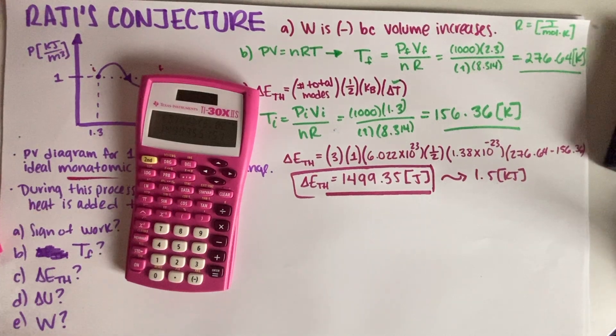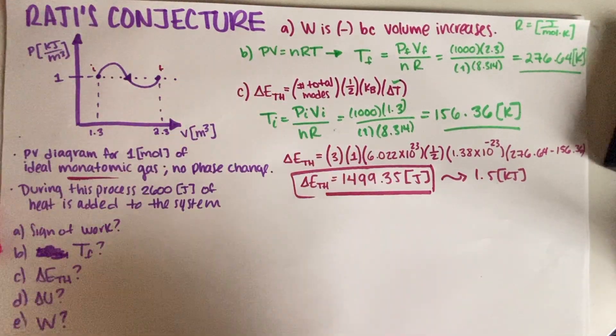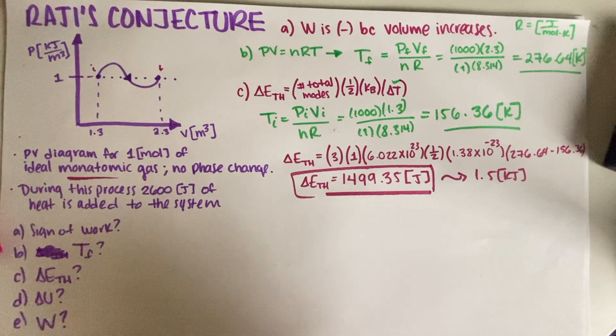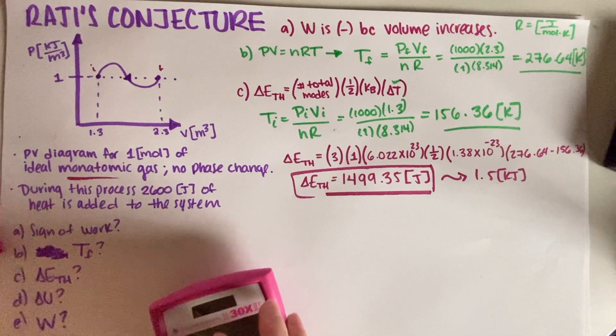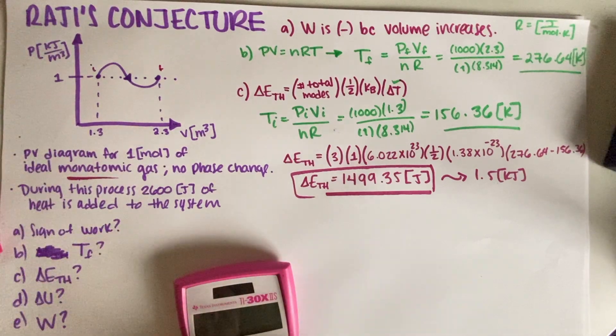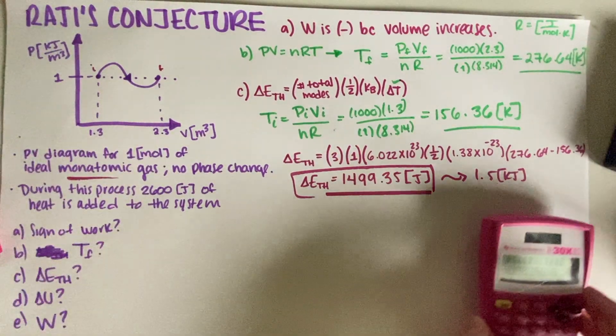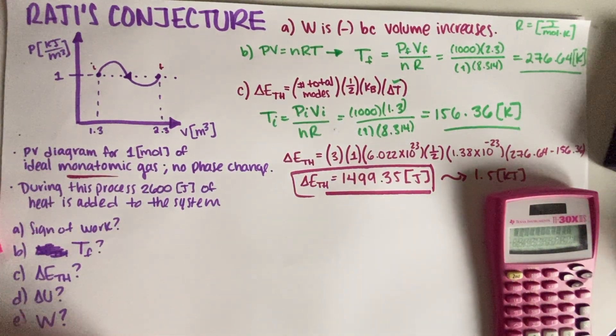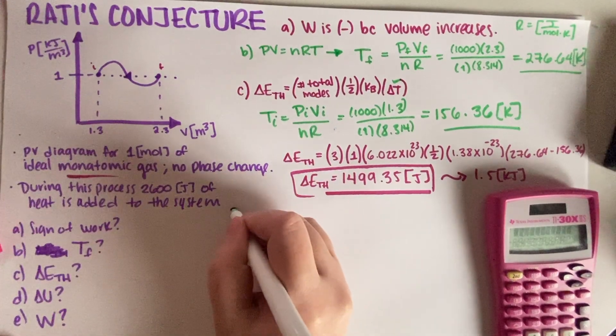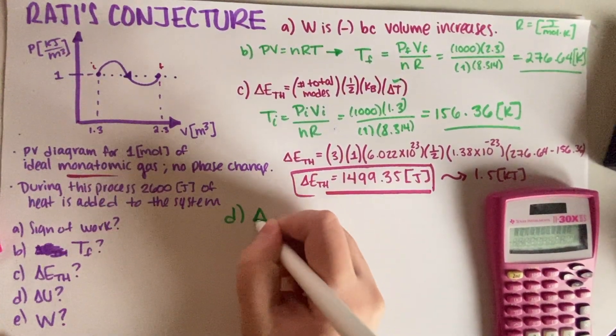There we go. So that would be our final answer. That was simple enough, except for the fact that I had to go back to either the bottom part of the quiz or Google to look for those constants that I don't have memorized. Everything else was pretty straightforward. It was just applying a definition. And now we're going to move on to part, what is this? D. So internal energy.